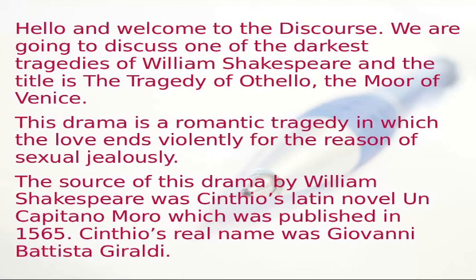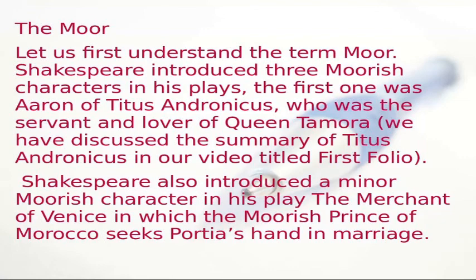Let us first understand the term Moor. Shakespeare introduced three Moorish characters in his plays. The first was Aaron of Titus Andronicus, who was the servant and lover of Queen Tamora. Shakespeare also introduced a minor Moorish character in The Merchant of Venice — the Moorish prince of Morocco, who seeks Portia's hand in marriage. The third Moor character of Shakespeare is Othello.